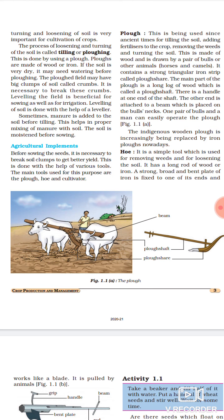Plow ek implement hota hai, jismein bahut saare blades hote hai. Pehle plow ki jagah pe horses ko use mein liya jata tha, lekin modern crop production mein plow use karte hai. Plow tractors ki help se kaam karta hai. Plow ke alawa kuch aur implements hai, jo agriculture mein help karte hai. So now we'll start agricultural implements.